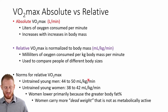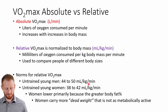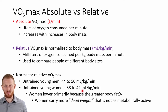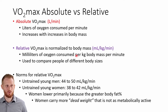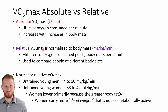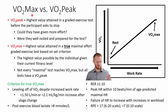Some normative values: for untrained young men, a pretty average relative VO2 max is about 44–50 mL/kg/min, while for women it's about 38–42 mL/kg/min. Women tend to be lower primarily because of greater body fat percentage. Body fat is essentially metabolically inactive tissue, so making VO2 max relative to total body mass — including fat — lowers the value compared to making it relative to lean muscle mass alone.